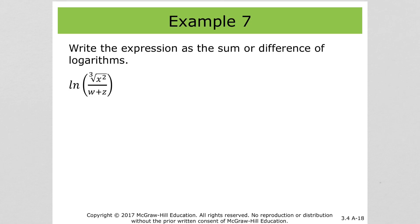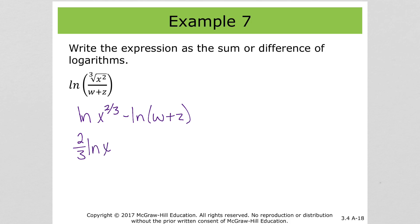Here's an even bigger one. We've got a log, and I'm going to take the cube root of x squared and change it to an exponent, so log of x to the 2/3 minus the natural log of (w plus z). Then we can bring the 2/3 out front: 2/3 natural log of x minus the natural log of (w plus z). We can't separate that.